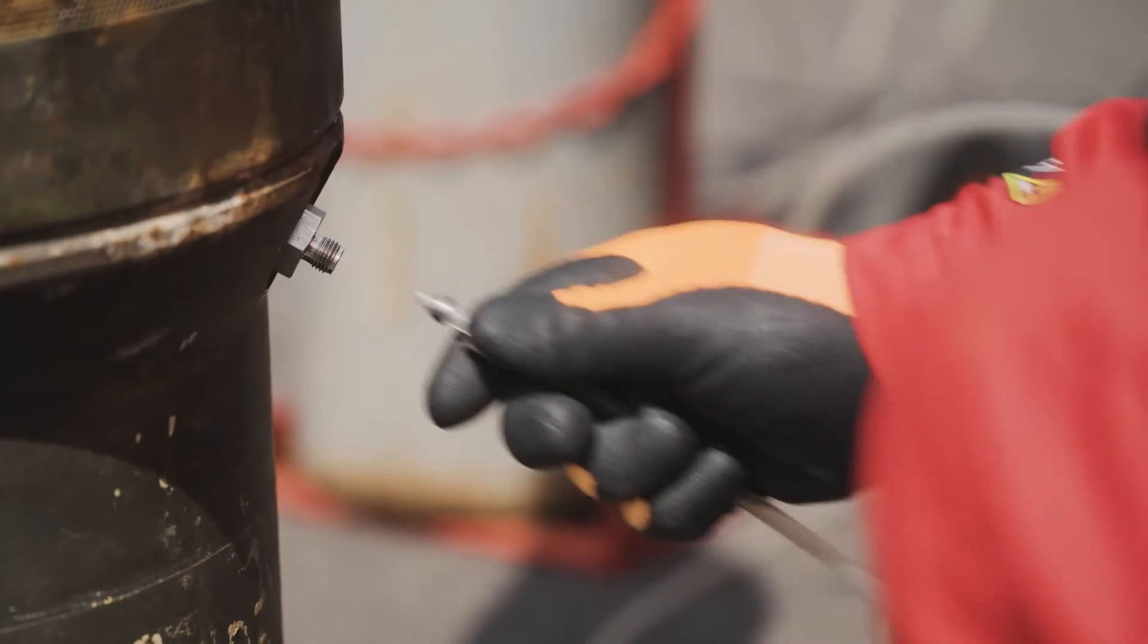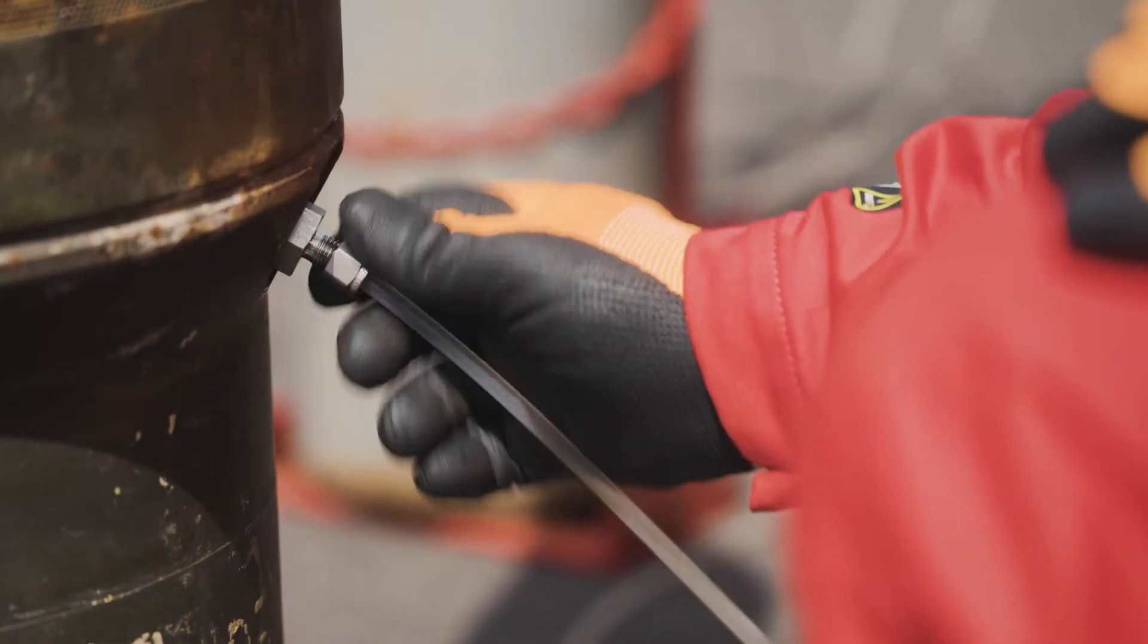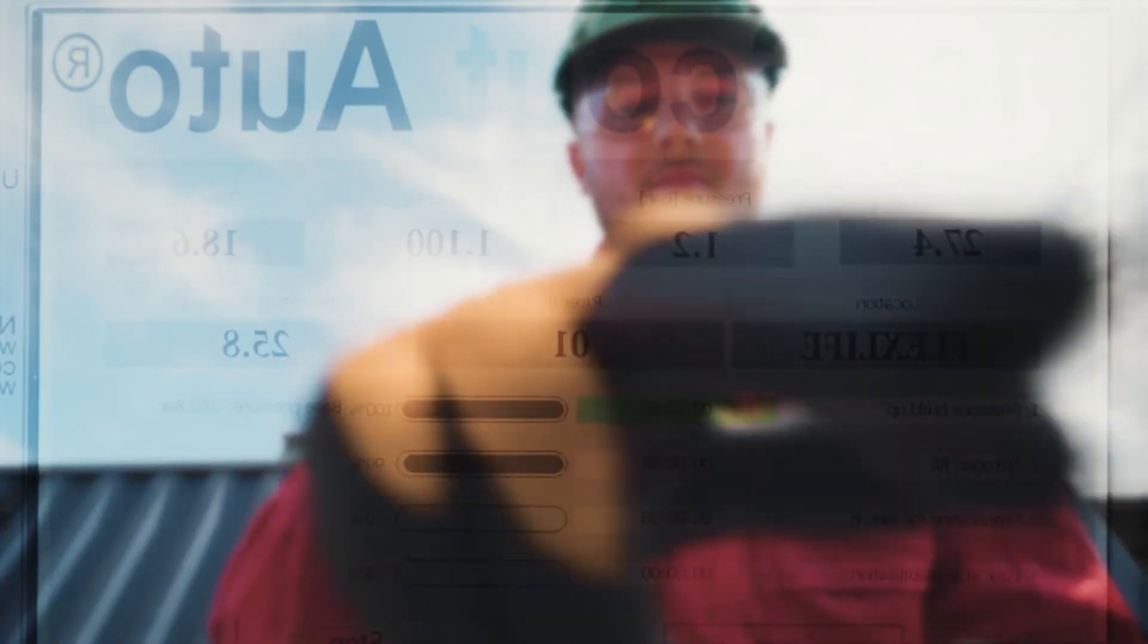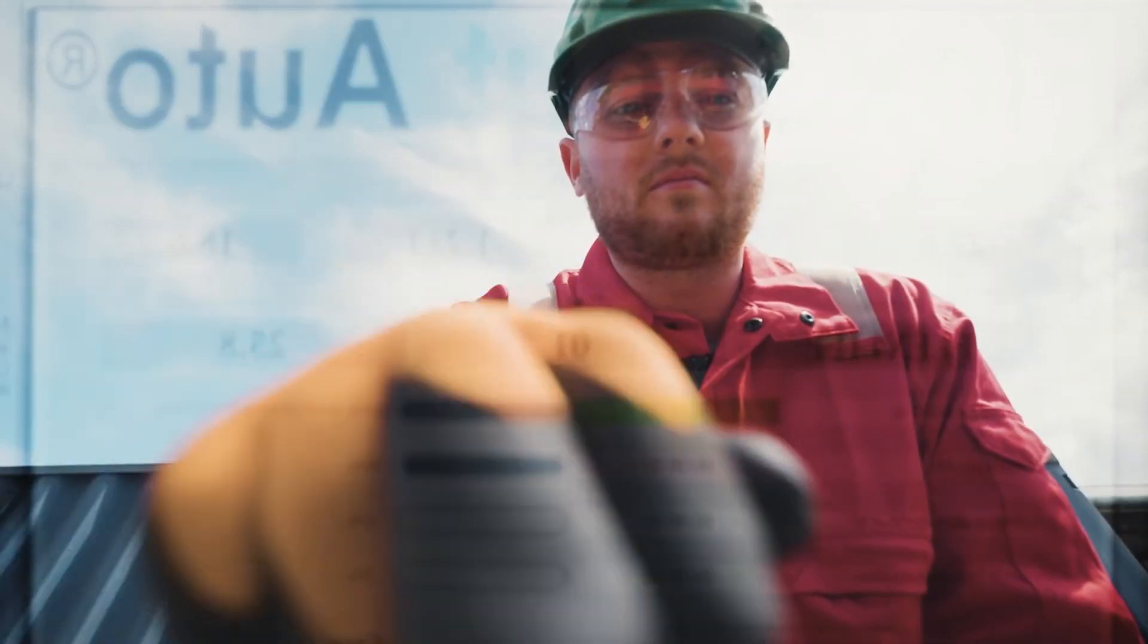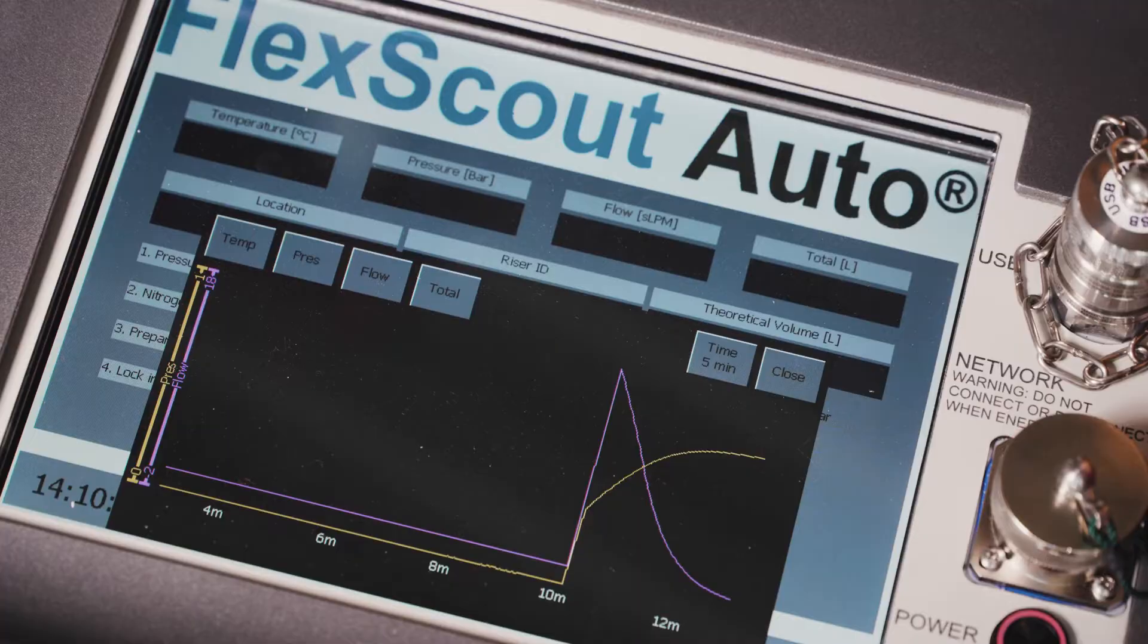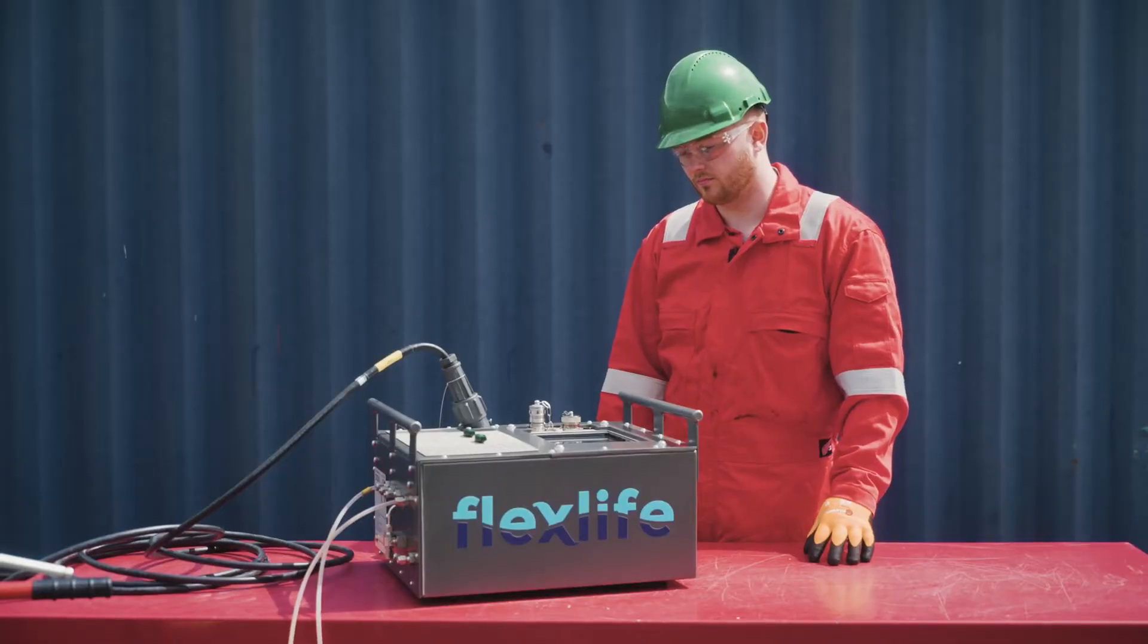Here's how it works. The riser's three vent ports are connected to the FlexScout Auto. Known riser information is keyed into its interface and FlexScout Auto performs the test automatically.